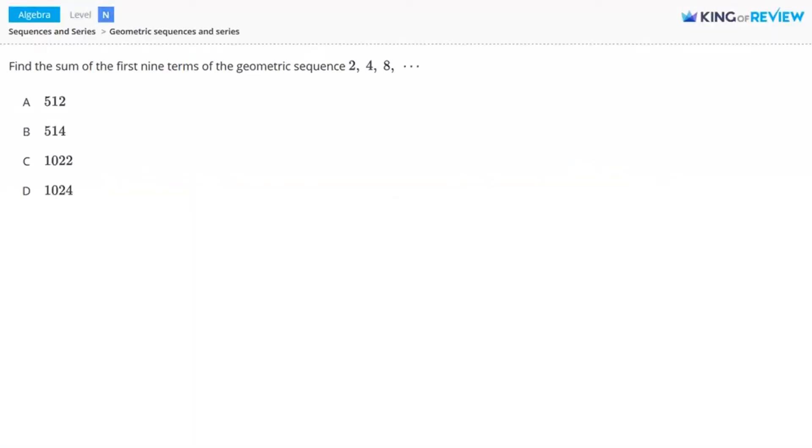Hi, this is King of Review. Find the sum of the first nine terms of the geometric sequence 2, 4, 8, and then the sequence continues.